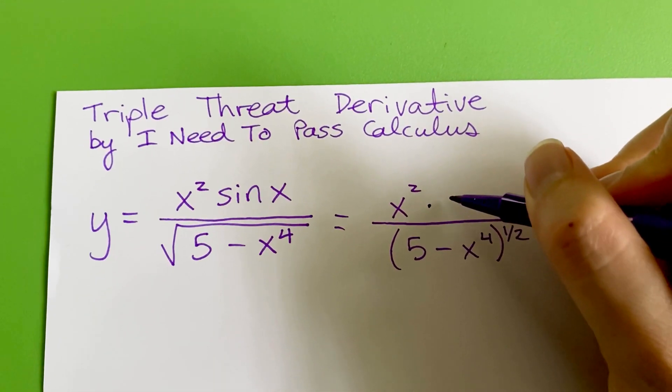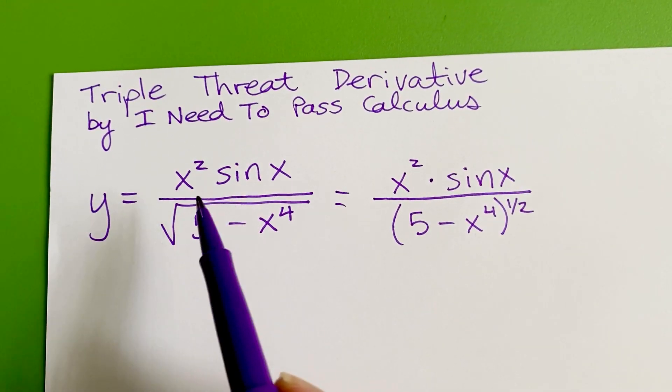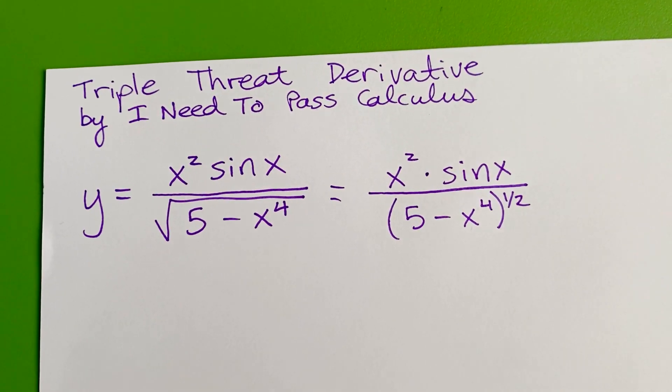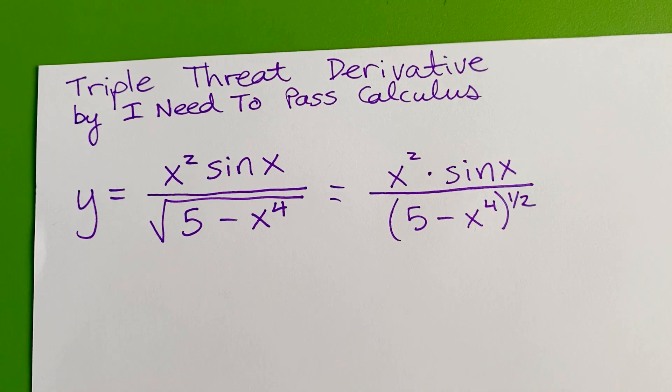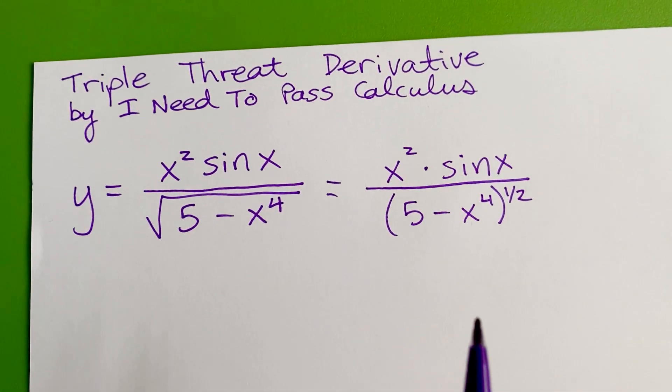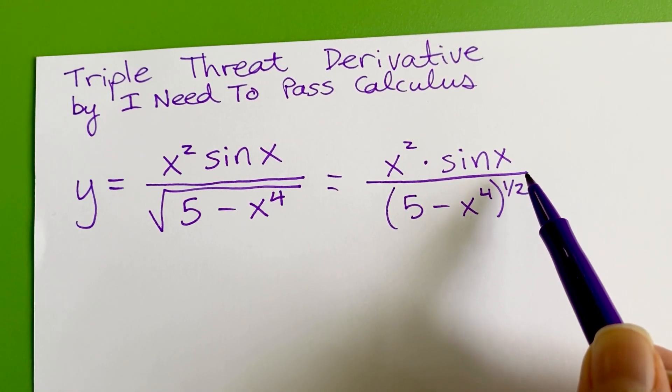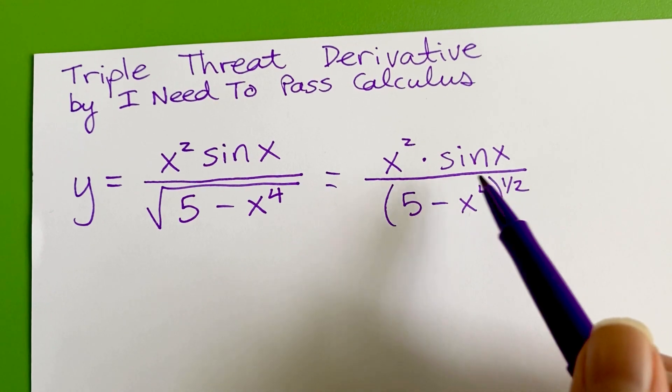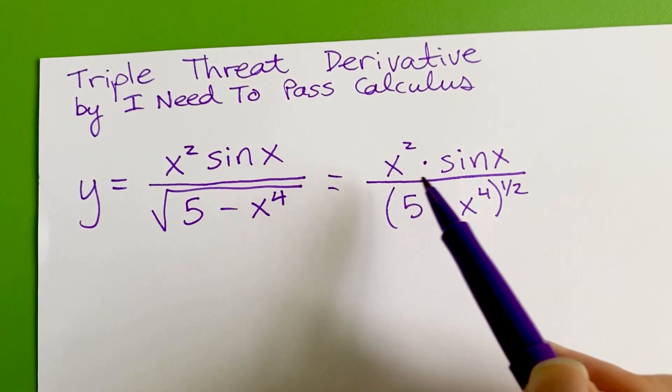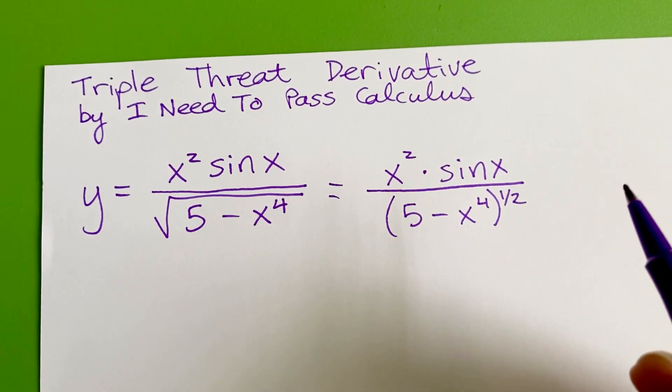I might put in a little product symbol there to emphasize to myself that these guys are glued together with multiplication and that'll help me think about, oh I need to do the product rule for that top part. When I look at this, the biggest structure I see, the first structure I see, is going to be this fraction bar. Every other structure, the nesting down in here or the product up in here, is within the fraction and so those will come up later.